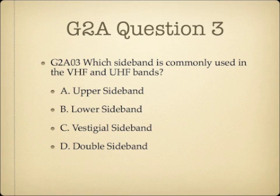Question 3. Which sideband is commonly used in the VHF and UHF bands? A. Upper sideband. B. Lower sideband. C. Vestigial sideband. Or D. Double sideband.